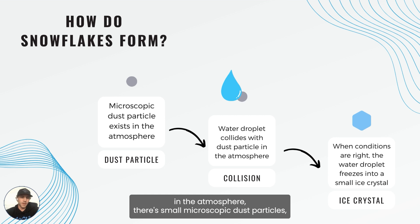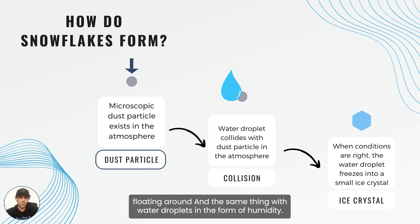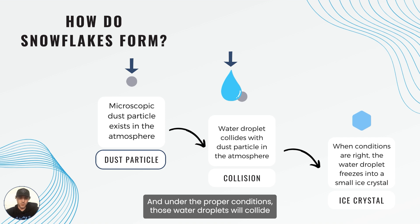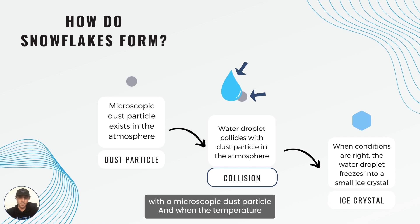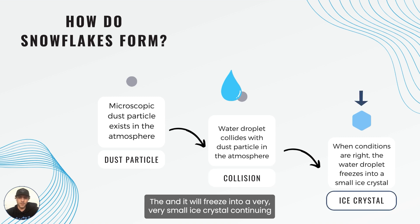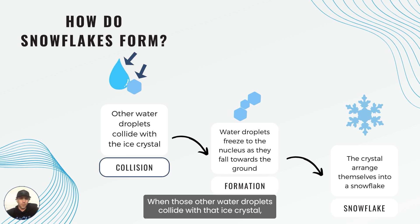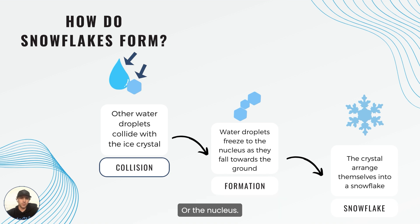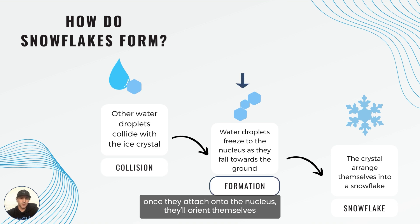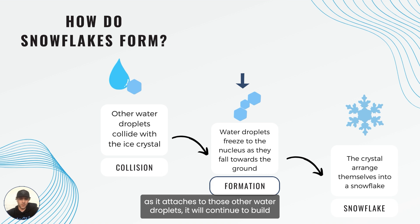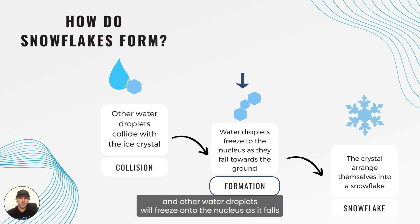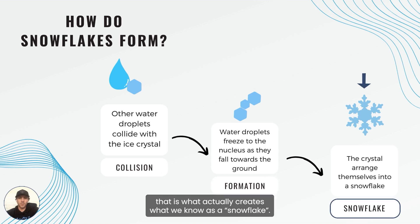In the atmosphere, there are small microscopic dust particles floating around, along with water droplets in the form of humidity. Under the proper conditions, those water droplets will collide with a microscopic dust particle. When the temperature and humidity are low enough, that water droplet will freeze onto that dust particle into a very small ice crystal. That ice crystal will then collide with other water droplets in the atmosphere, which attach and freeze onto the nucleus, orienting themselves according to the molecular structure of the ice crystal. As it gains mass it falls, continuing to collect water droplets, and that is what creates what we know as a snowflake.